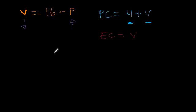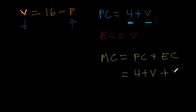The first thing we're asked to find out is an expression for the marginal cost of travel. That just equals the sum of the two costs we've talked about already. It equals the private cost plus the external cost, so that's going to equal 4 plus V plus V, which is 4 plus 3V.